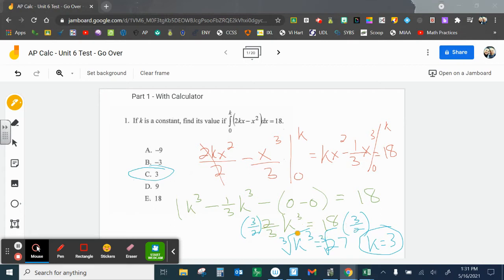So 1 minus 1 third is 2 thirds k cubed equals 18. Multiply both sides by 3 halves, get k cubed equals 27. Take the cube root of both sides, k equals 3. So number 1 is c.